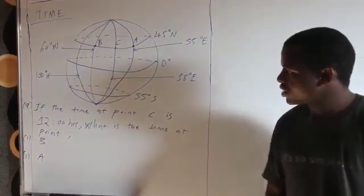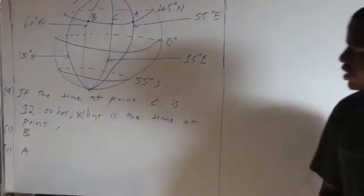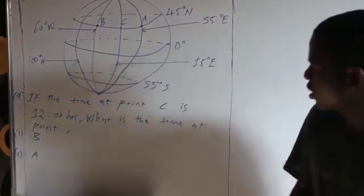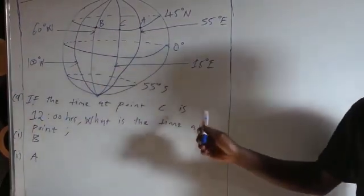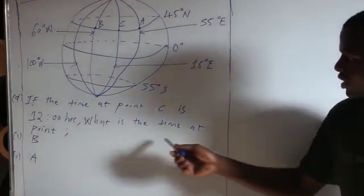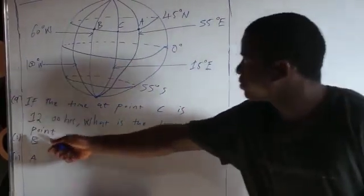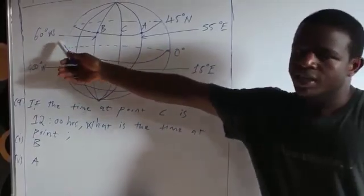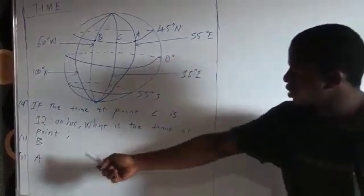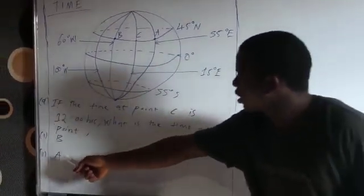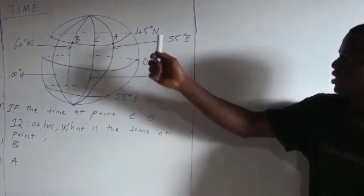The question asks: find the time at point C. If the time at point C is 12 hours, what is the time at point B, which is on the west side, and the time at point A, which is on the east side?